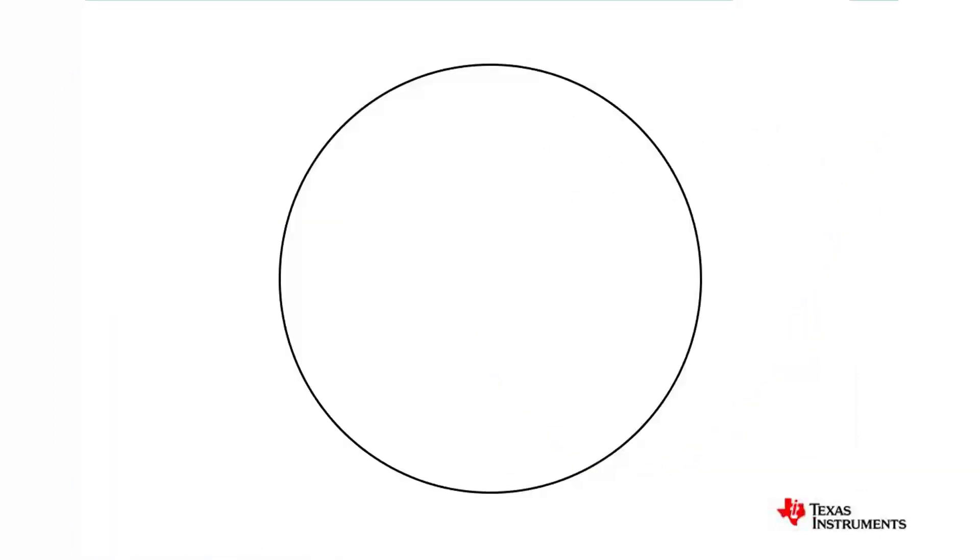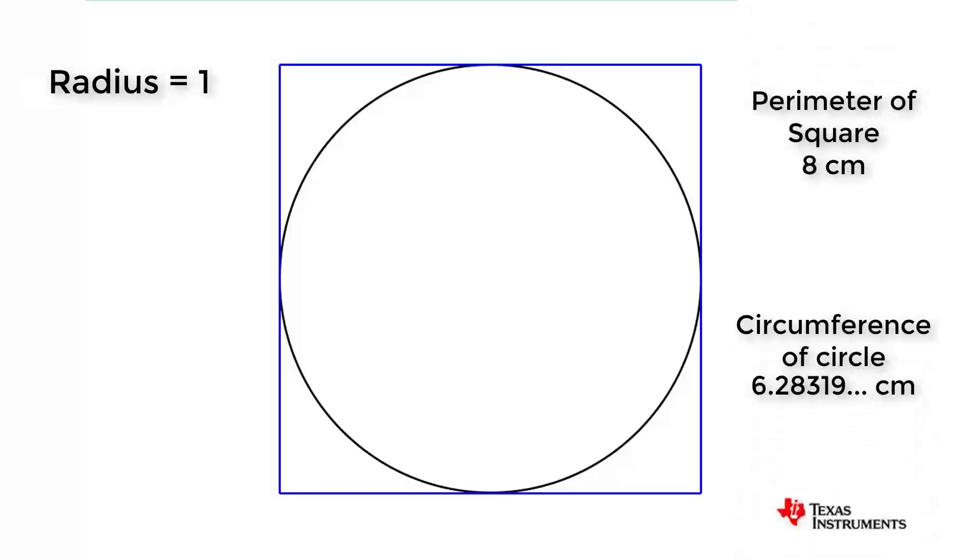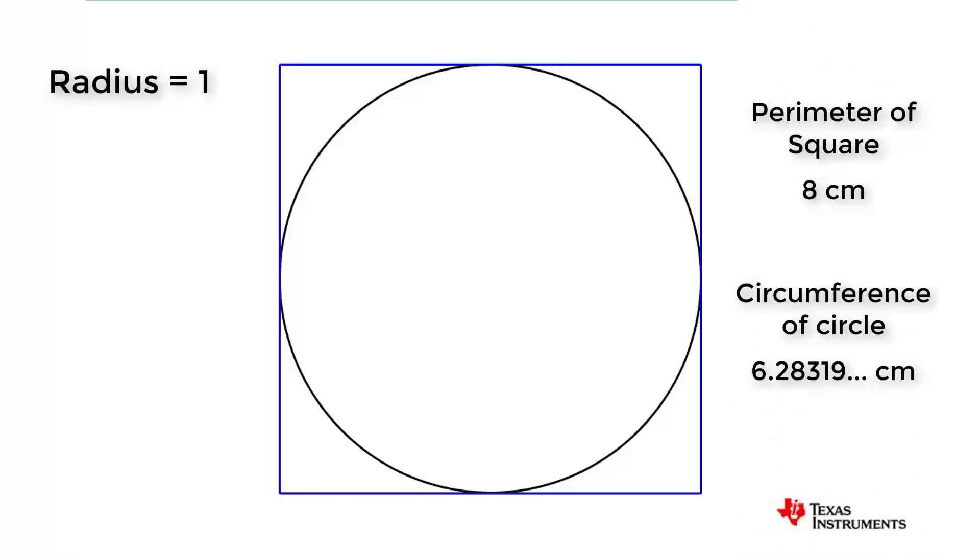Suppose we want to approximate the circumference of a circle by using a square that just fits around the outside of the circle. It's not a great approximation, but it's a start.